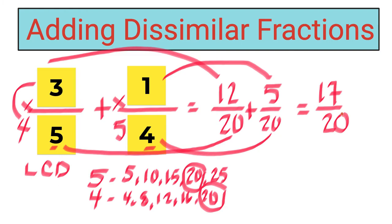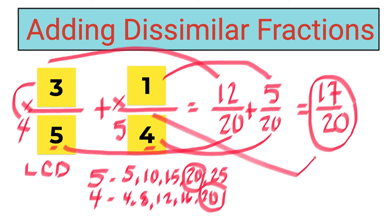Now take a look — is our answer final and simplified? Yes, this is already simplified. It is a proper fraction that is simplified already. So therefore, three-fifths plus one-fourth equals seventeen over twenty.